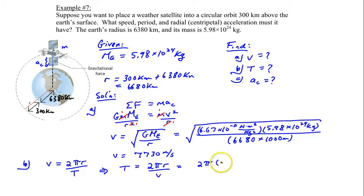2πr, r was 6,680,000 meters, and then divided by the velocity we just found, which is 7,730 meters per second. That will give you a period of 5,430 seconds.